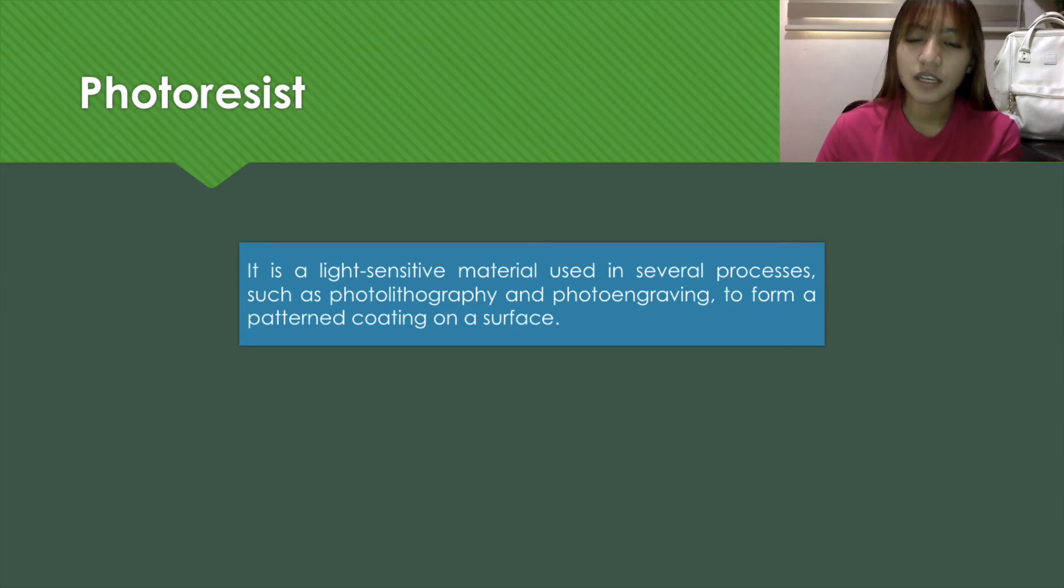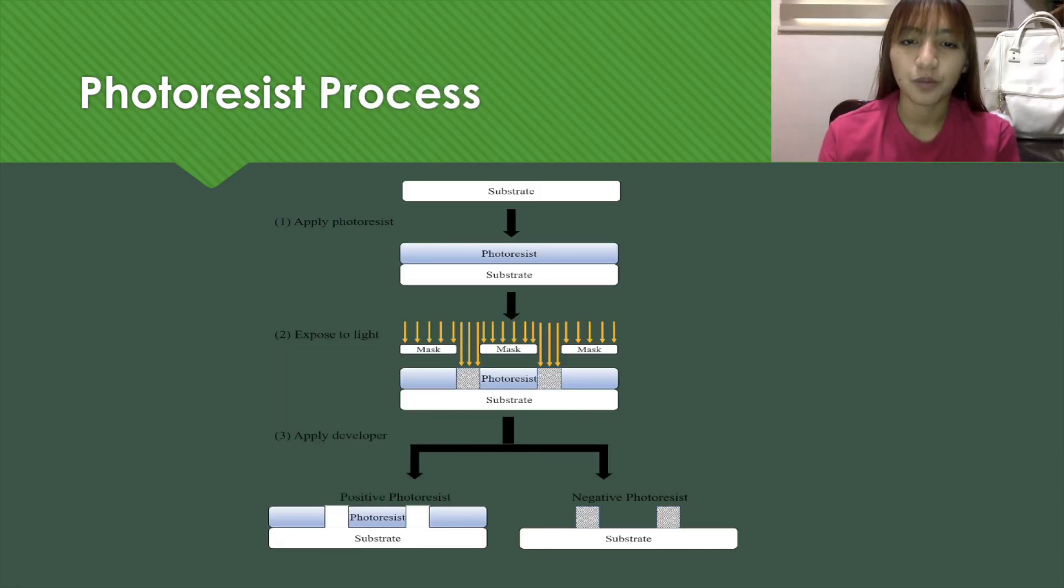Another important IC terminology is photoresist. Photoresist is a light sensitive material used in several processes such as photolithography and photo engraving to form a pattern coating on the surface. As you can see in the shown process, it can be observed that there is exposure to light. This is because photolithography is a process that transfers shapes from a template to another surface using light.